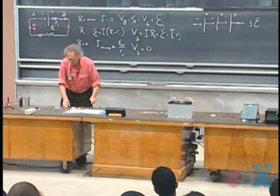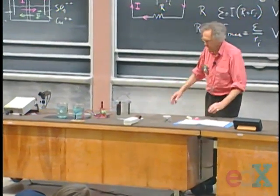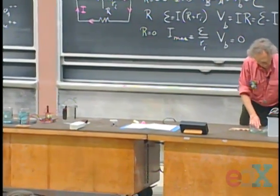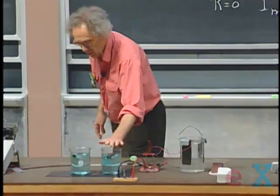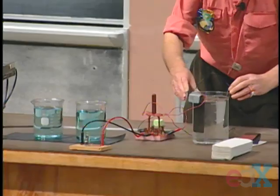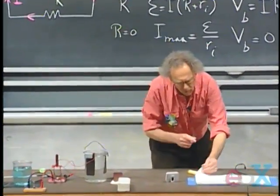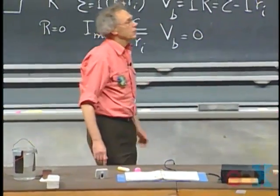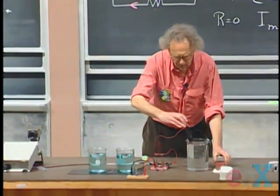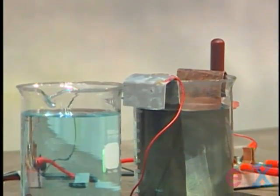I'm going to build with you a copper-zinc battery of the kind we just discussed. Here's the copper sulfate solution — H₂SO₄ — and here are my plates: this is my zinc plate and this is my copper plate. You're going to see the voltage displayed over there. There is no potential difference now because they're not in place yet. Here comes my zinc and here comes my copper — they go into the solution and you see about one volt.